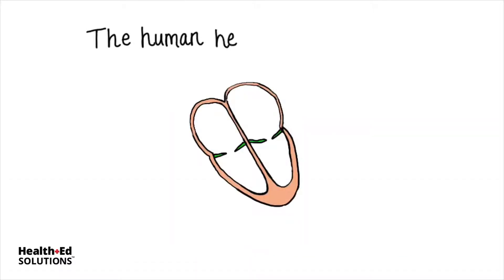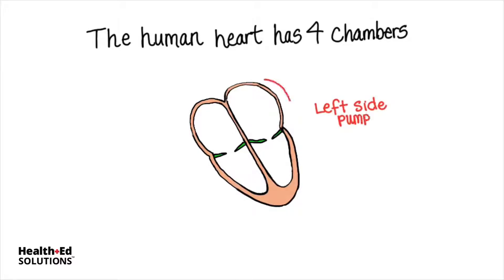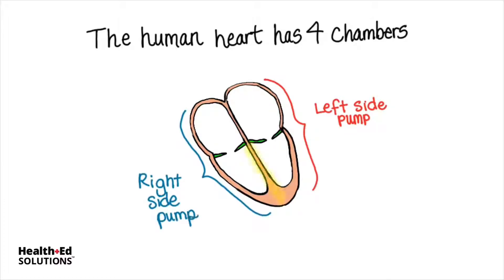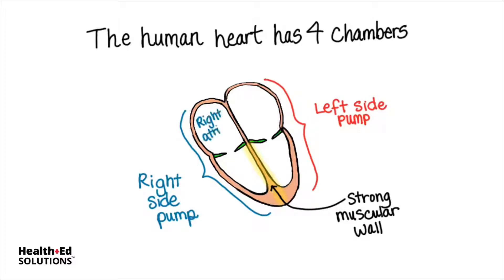The human heart is made up of four chambers. It has a left side pump and it has a right side pump. The wall in between is called the interventricular septum. It's strong and it's very muscular. The upper chambers are called the right atrium and the left atrium. The lower chambers are the right ventricle and the left ventricle.